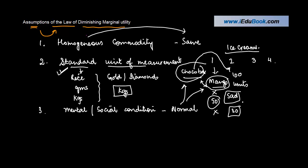While you were having this, suddenly your results were declared. It was true that you have secured 95%. You are very happy. So the satisfaction you get from the second one is even higher. So your mental and social conditions are assumed to be normal.